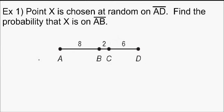Example 1. Point X is chosen at random on segment AD, so it's somewhere on this segment. We want to find the probability that X is on AB.